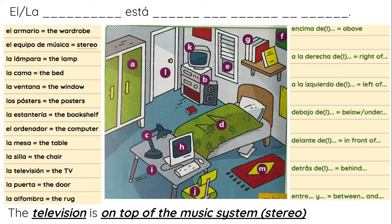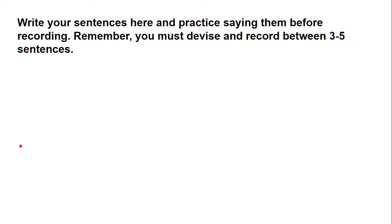Let's make a sentence. Let's say I want to say the lamp is on the table. Here's the lamp. I'm going to find the word for lamp — la lámpara. Then I need the word for is — está. Then I need the word for on — encima de. Then I need the word for table — la mesa. So: la lámpara está encima de la mesa. I've popped you a slide where you can write your sentences and practice saying them before you make your recording.